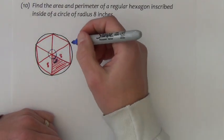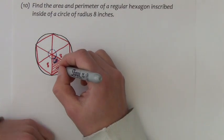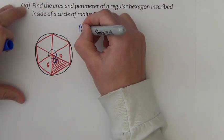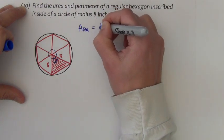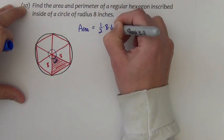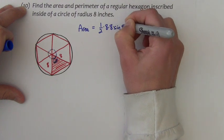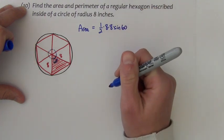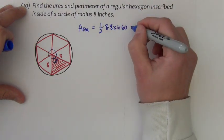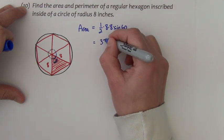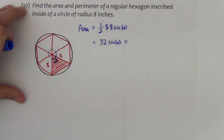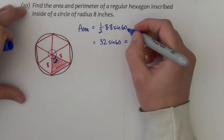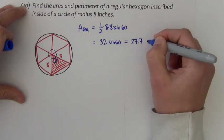So we have, for this triangle, so the area of the triangle is equal to half times eight times eight times the sine of 60. So that's going to be 32 sine of 60. And we'll just go ahead and use a decimal maybe to the nearest tenth. That's 27.7.